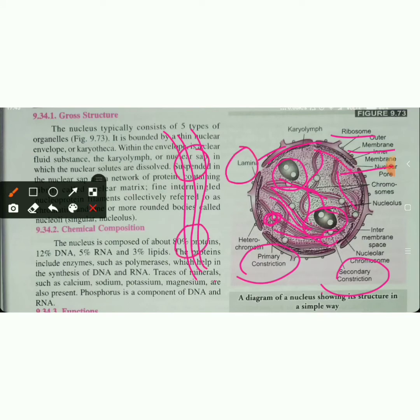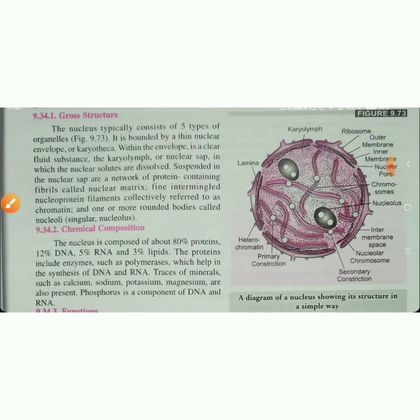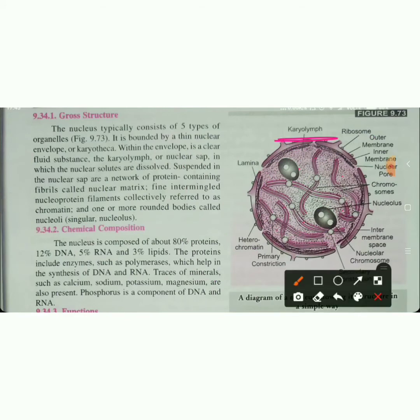You can see the dark-coloured region, which is called heterochromatin. The fluid inside the nucleus is called karyolymph.